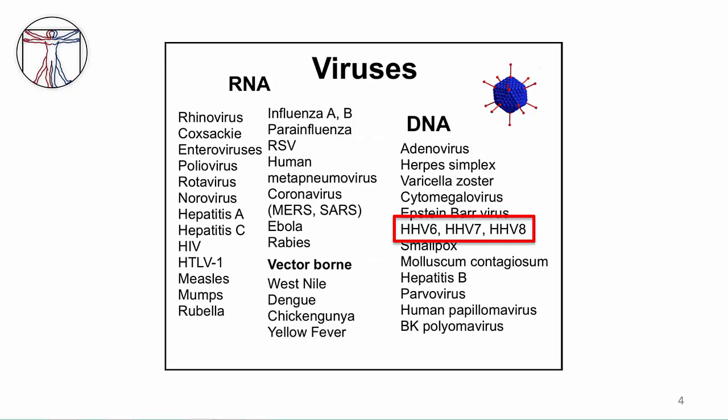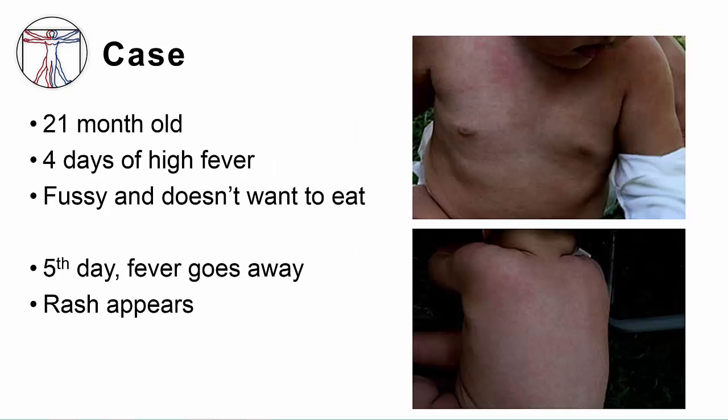As you can see from the course map, HHV6 and 7 are related to other herpesviruses. I will spend most of this video talking about HHV6 because it causes more disease in patients.